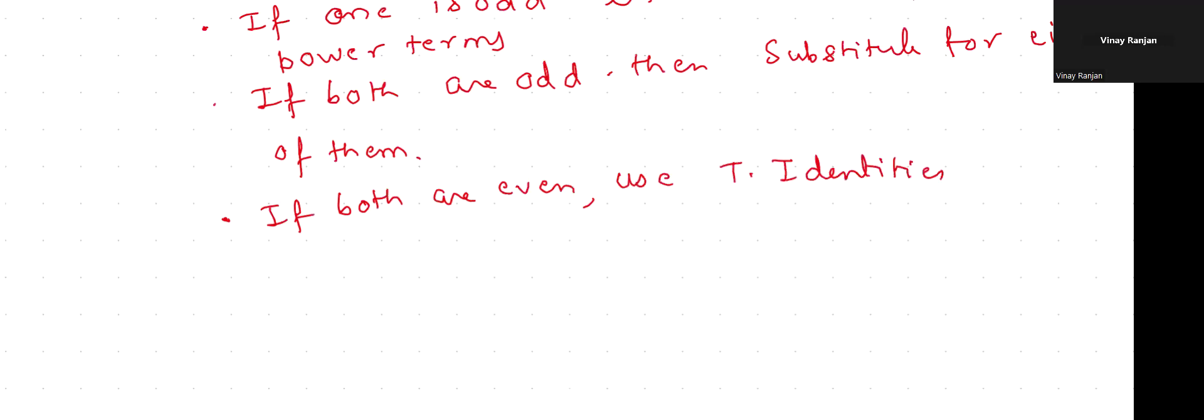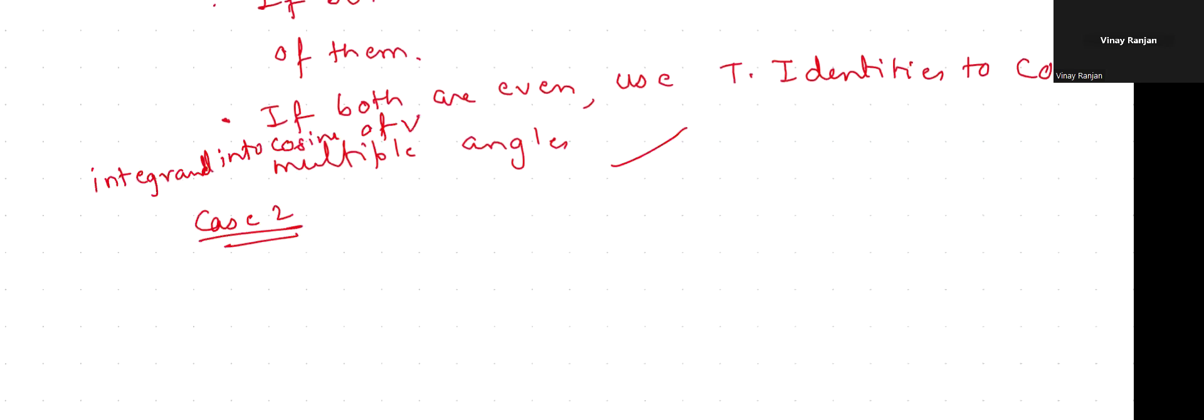To convert the integral into cosine of multiple angles. Case number two: when m plus n is a negative even integer.